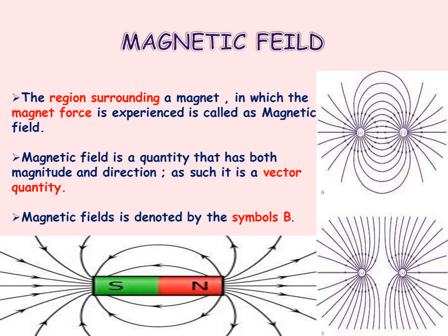We will start with the definition of magnetic field. Consider any bar magnet — if a second bar magnet comes near to it, it will attract or repel depending on the poles. Like poles repel and unlike poles attract. The cause of this attraction and repulsion is the magnetic field. The region surrounding a magnet in which the magnetic force is experienced is called the magnetic field.